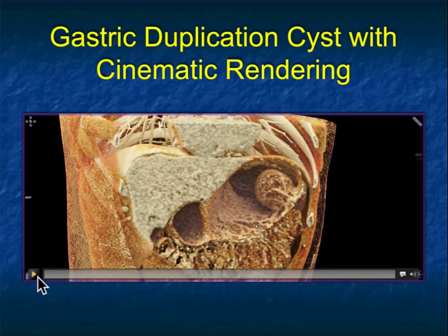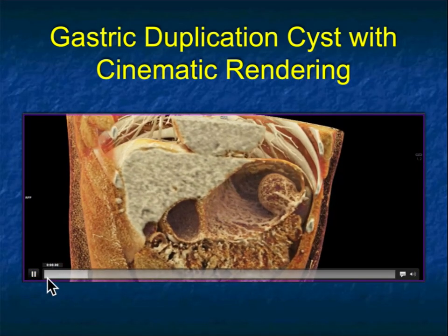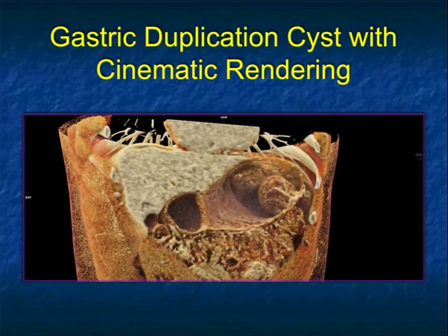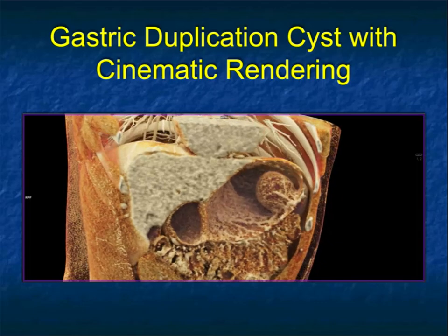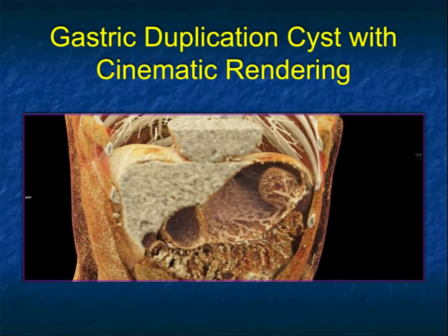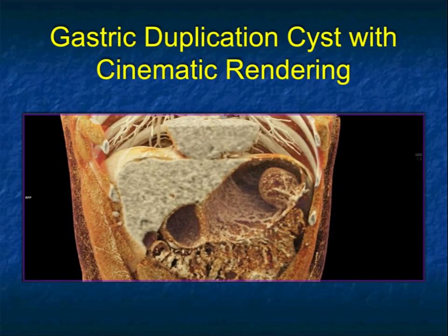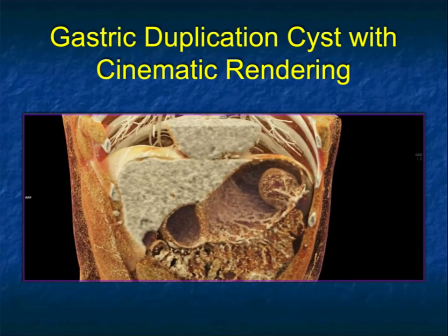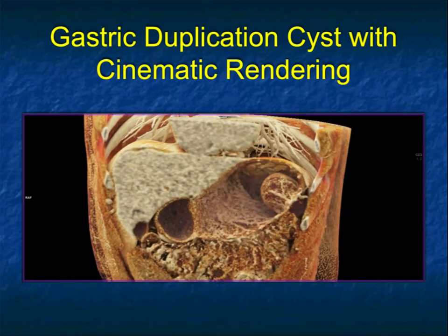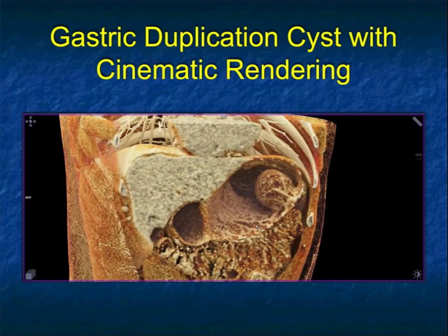Just a really nice example. You can see it here with volume-rendering with a bit of motion. This case also makes the point — look at the folds in the stomach, how nicely you can see the orientation of the mass, its intraluminal component, and the gastric folds. A very nice example of how much information we can get from cinematic rendering and how much you can get from interactivity rather than just looking at static images.